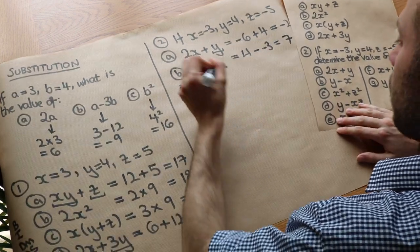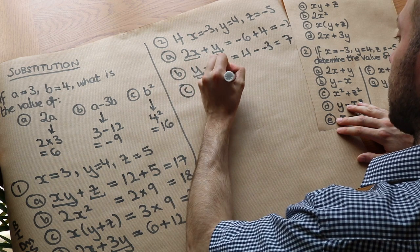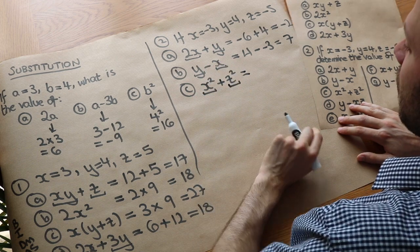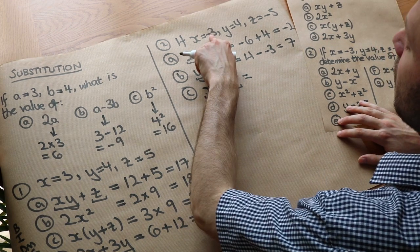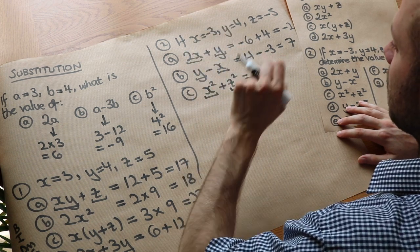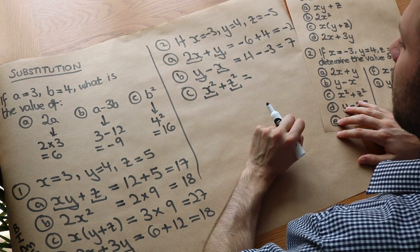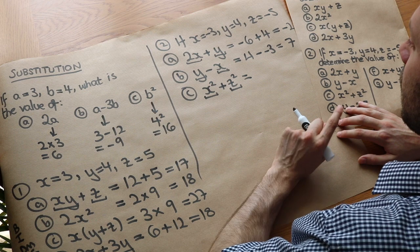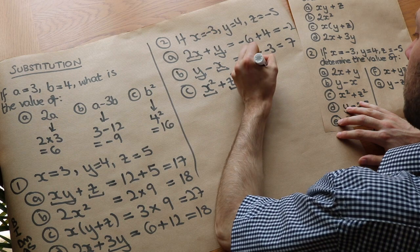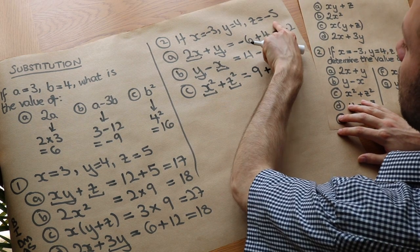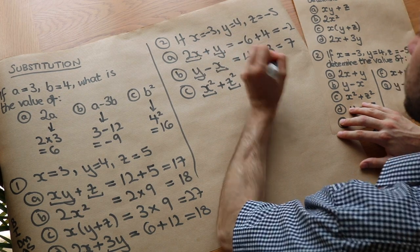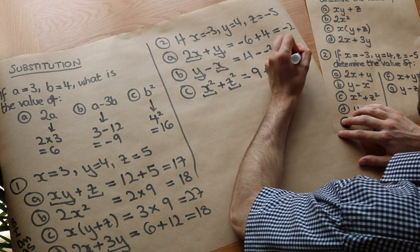Let's do c: x squared plus z squared. Work out each term and put the symbol in between. x squared is minus 3 squared. To square a term means to times it by itself, so it's minus 3 times minus 3. Negative times negative is positive, so it's positive 9. Plus z squared: that's minus 5 squared, and in the same way, negative times negative gives positive 25. Then 9 plus 25 is 34.